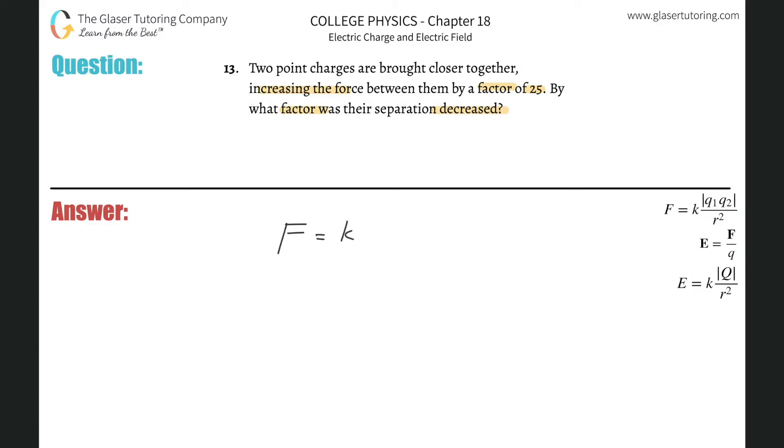It will be equal to the electrostatic constant k multiplied by the product of the two charges q1 and q2, taking the absolute value of that product, and then dividing it by the distance between those objects squared.